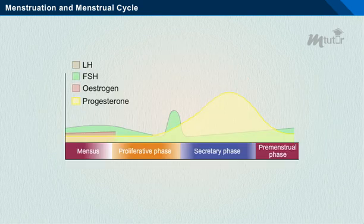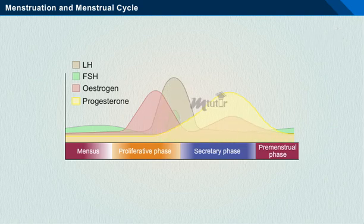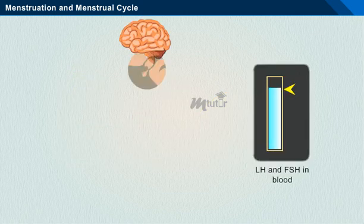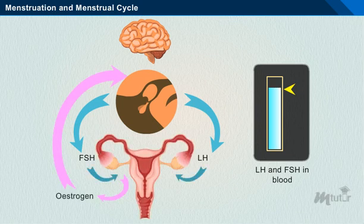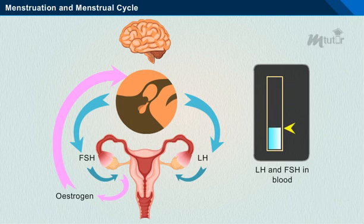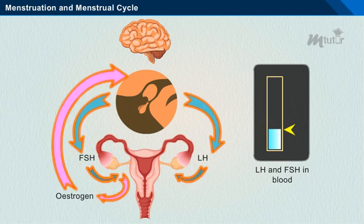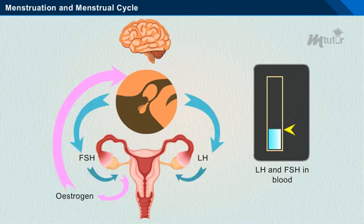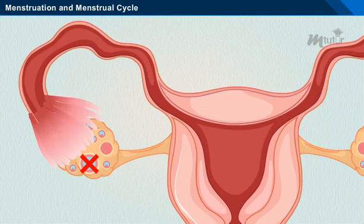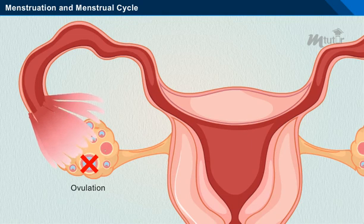During the menstrual cycle, the level of LH and oestrogen start to increase and reach the highest level around the seventh day. However, maintenance of high concentration of sex hormones such as oestrogen exerts negative feedback on the anterior pituitary, decreasing LH and FSH secretion, thereby lowering their level in blood. Due to insufficient LH level, no ovulation occurs, which causes irregular menstruation.